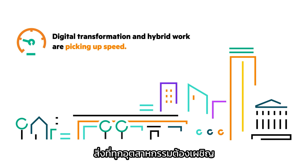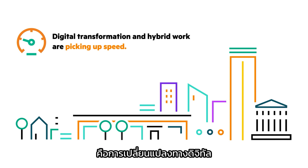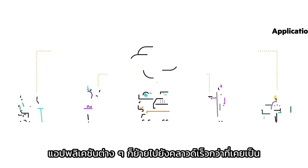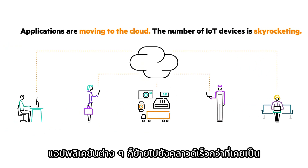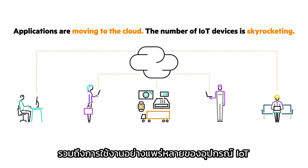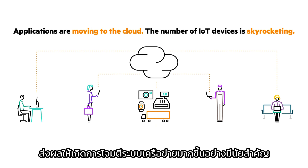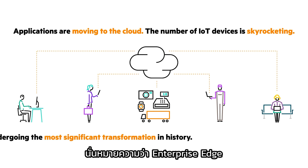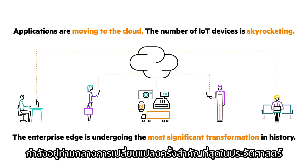Across every industry, digital transformation and hybrid work are picking up speed. Applications are moving to the cloud faster than ever, and the proliferation of IoT devices have significantly increased the attack surface. That means the enterprise edge is undergoing the most significant transformation in history.